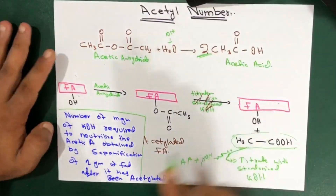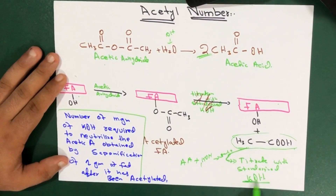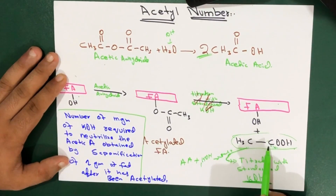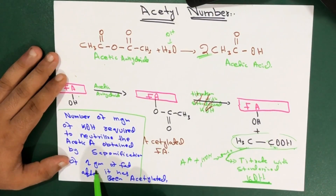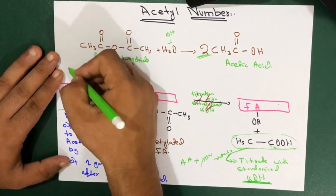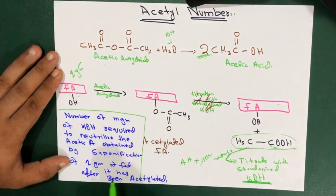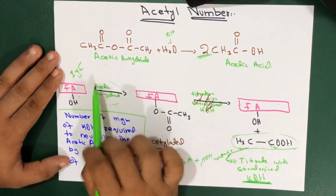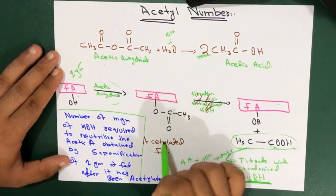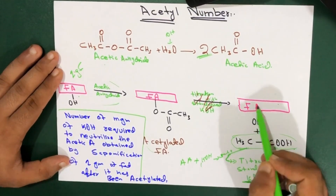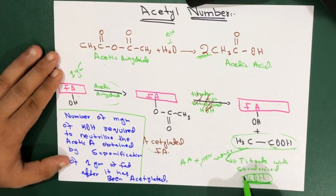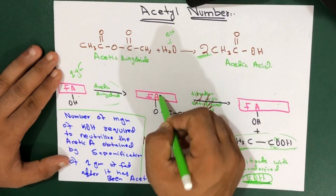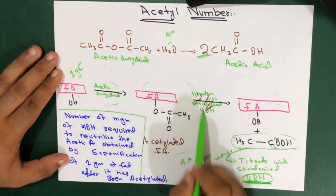Coming back to the definition: the number of milligrams of potassium hydroxide required to neutralize the Acetic Acid — this is the Acetic Acid — obtained by saponification of one gram of fat — we had one gram of fat, for example this fatty acid came from one gram of fat — after it has been Acetylated, meaning we added Acetic Anhydride and converted it into the Acetylated fatty acid. When broken down, it gives Acetic Acid, which is neutralized with KOH. So this is the whole definition: the number of milligrams of potassium hydroxide required to neutralize the Acetic Acid obtained by saponification of one gram of fat after it has been Acetylated.